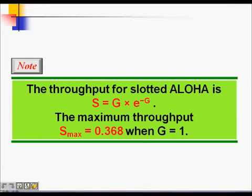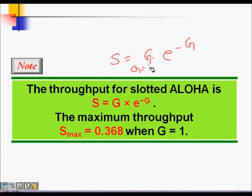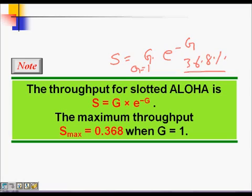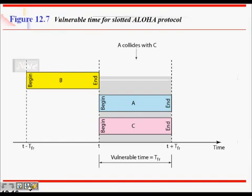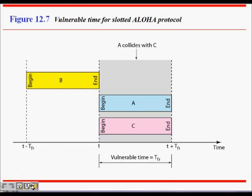The Slotted ALOHA throughput formula is S = G × e^(−G). The maximum throughput is 36.8%, achieved when G = 1 frame per slot — double the efficiency of Pure ALOHA. Out of 100 packets sent, approximately 36.8 will be transmitted successfully, and the vulnerable time is just one Tfr.